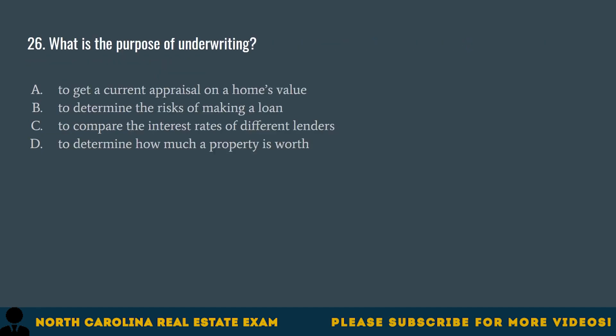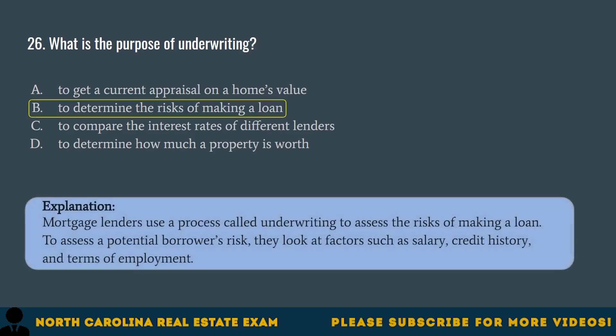Question 26. What is the purpose of underwriting? A. To get a current appraisal on a home's value. B. To determine the risks of making a loan. C. To compare the interest rates of different lenders. D. To determine how much a property is worth. The correct answer is B. To determine the risks of making a loan. Mortgage lenders use a process called underwriting to assess the risks of making a loan. To assess a potential borrower's risk, they look at factors such as salary, credit history, and terms of employment.